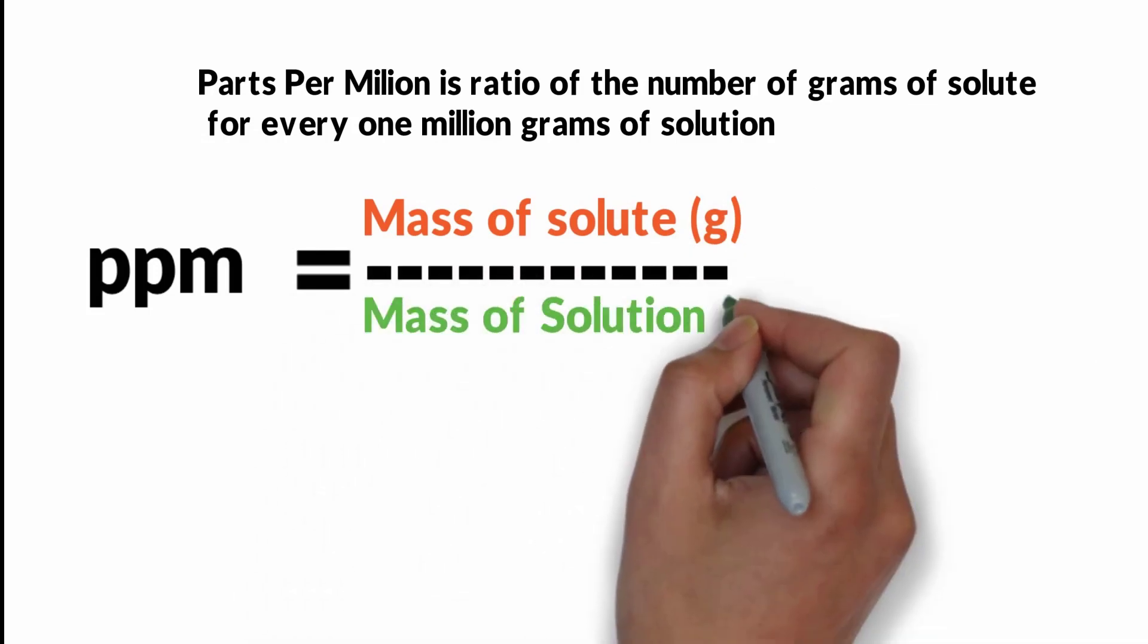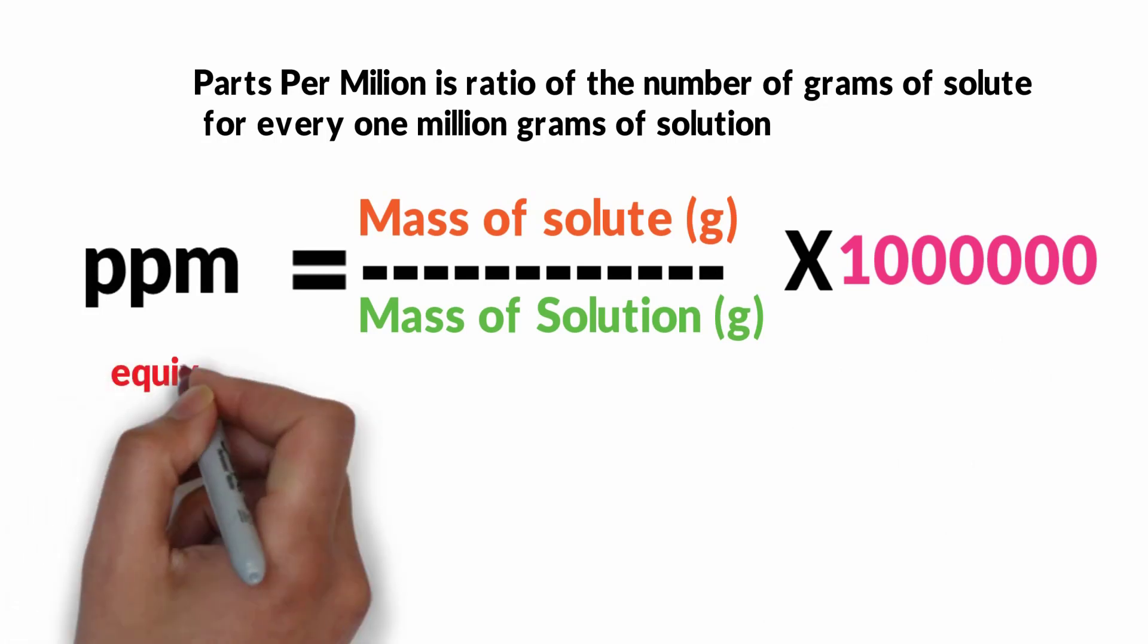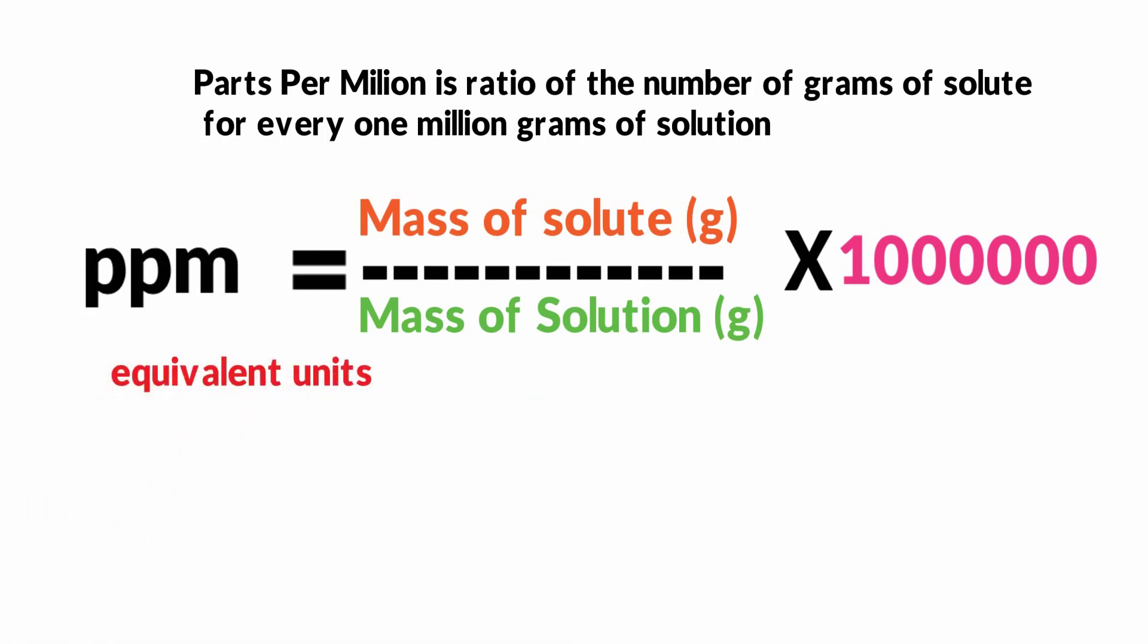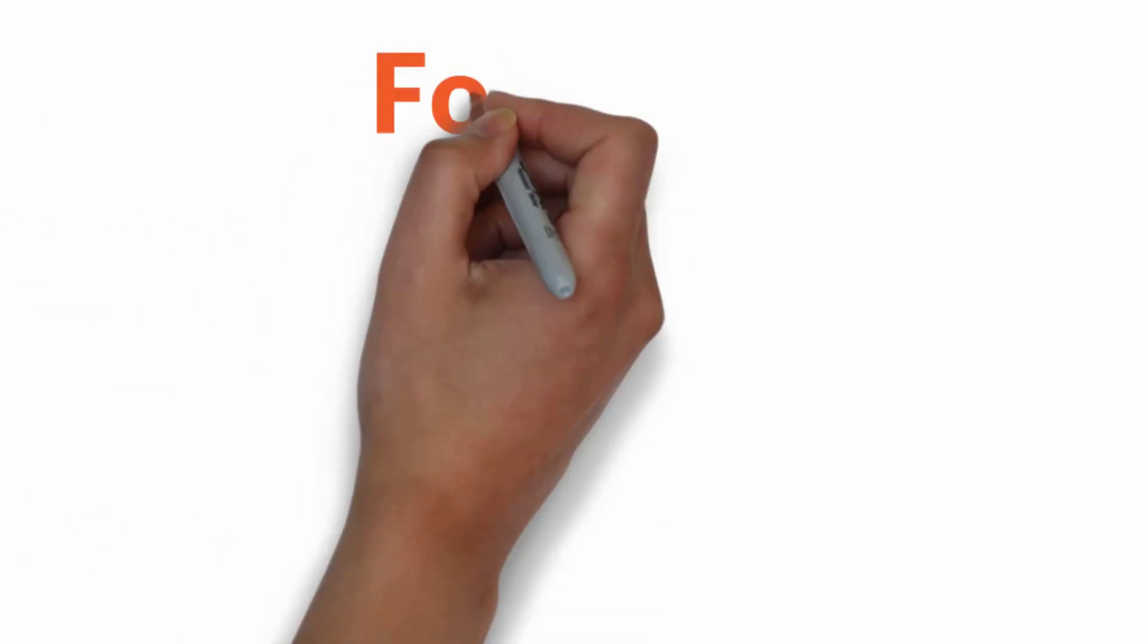Here are equivalent units to 1 ppm: 1 ppm equals 1 milligram per kilogram, equals 1 milligram per liter, equals 1 microgram per gram, equals 1 microgram per milliliter, and equals 1 microliter per liter.